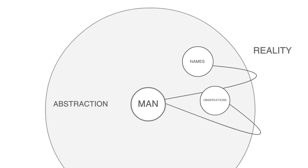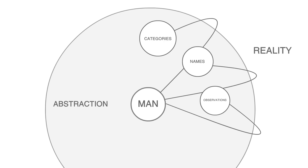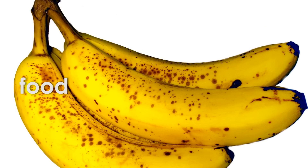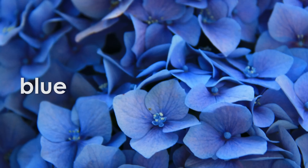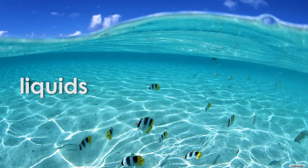Once man has made observations and named the things that he's observed, he then begins organizing them into categories. You'll notice that we go from man through names into reality. We're now equipped with observations that have got names, and we look at various ones and see if they relate to one another, if they're of the same type. When they are, we say they have the same category, and we give the category a name as well as the individual thing. Organizing reality into abstract categories is a fundamental cornerstone of how we began to understand things.